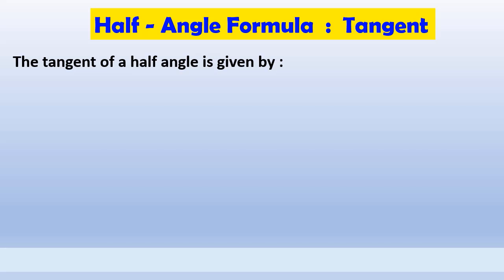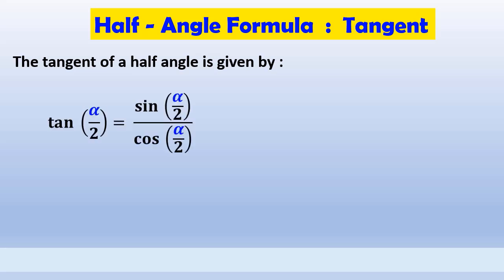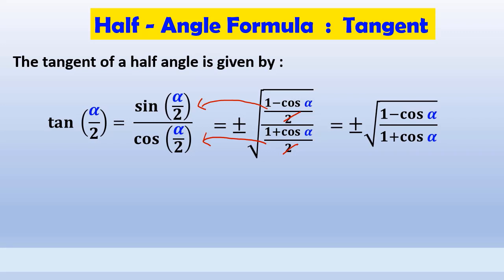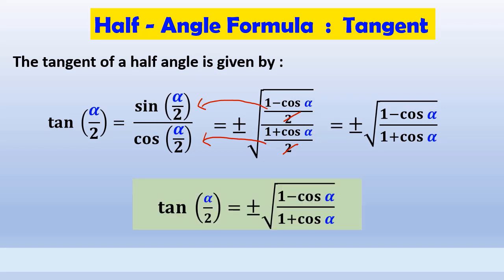To derive the half-angle formula for tangent, we start with the basic definition of tangent in terms of sine and cosine. Tangent of alpha over 2 is defined as sine of alpha over 2 divided by cosine of alpha over 2. We substitute their corresponding half-angle formulas for sine and cosine, then simplify to get plus or minus the square root of (1 minus cosine alpha) divided by (1 plus cosine alpha). Therefore, we obtain the half-angle formula for tangent.